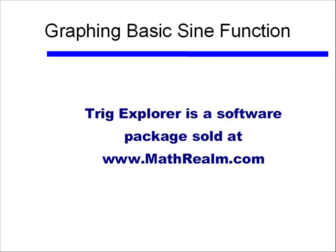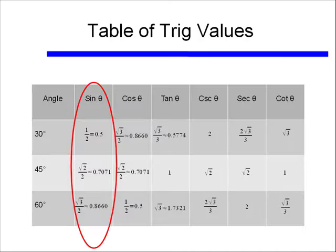Let's look at graphing the sine function. I'm going to use Trig Explorer, a software package available at www.mathrealm.com. Before that, let's go back to the table of trig values we discussed back in video 5. For angles of 30, 45, and 60 degrees, the sine values were 1/2, square root of 2 over 2, and square root of 3 over 2. To graph these on an x-y axis, I'll use their decimal approximations.